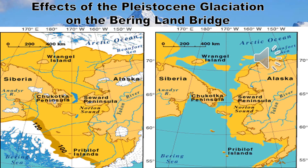This slide shows the effects of the Pleistocene glaciation on the Bering Land Bridge. On the left, you can see the former land bridge between Alaska and Siberia, which was used by many land mammals and even humans. On the right, you can see modern-day Alaska and Siberia. All the water in between came from the melting of large ice sheets during the Pleistocene epoch.